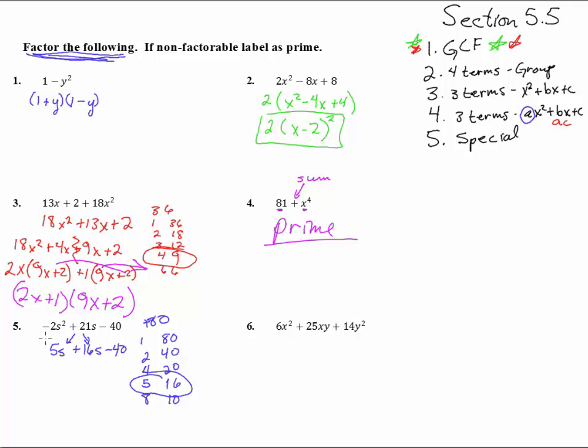So this guy came from a 5s and a 16s, and we'll put that -40 where it goes and that -2s². All right, what can we pull out of there? s(-2s + 5). And what can we pull out of this second half? Looks like we can pull an 8 out - 8 goes into 16 and 40.